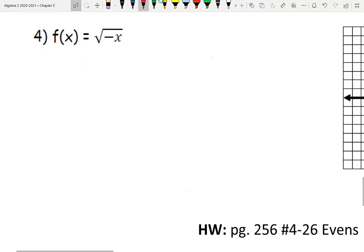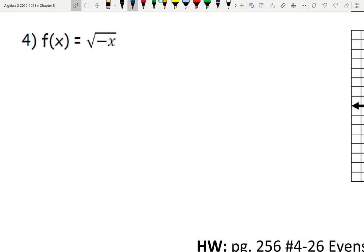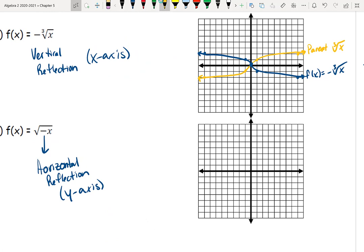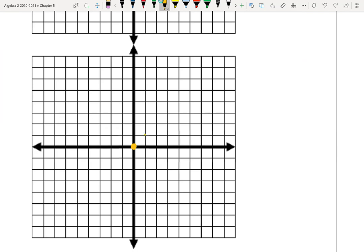Last but not least, number 4, we have a negative inside our square root. Since it's happening on the inside, we know it's going to be a horizontal change. This negative on the inside means it's going to be a horizontal reflection over the y-axis. The nice thing here, it's a square root function, so it should be super easy. If this is our normal square root function, starts at the origin, goes up 1 over 1, up 1 over 1, 2, 3, up 1 over 1, 2, 3, 4, 5. This is our normal parent graph, the parent square root of x.